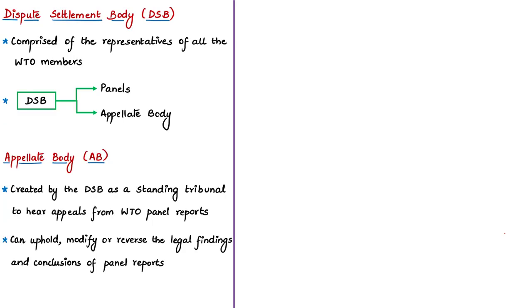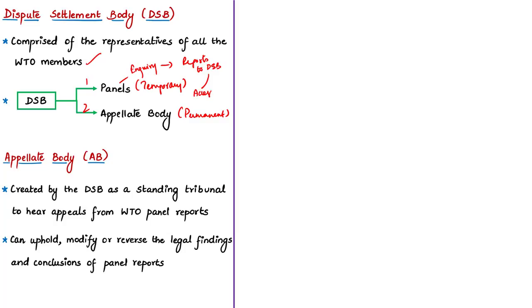The dispute settlement body is comprised of representatives of all WTO members. It consists of two important wings: temporarily constituted panels and the permanent appellate body. The panels make inquiry about disputes referred to the dispute settlement body and submit their reports. The dispute settlement body accepts these reports through the reverse consensus process, meaning a report is considered accepted unless disapproved by any of its members.